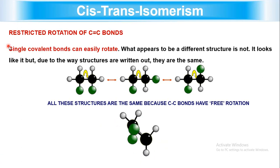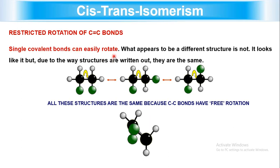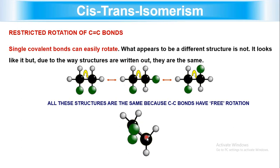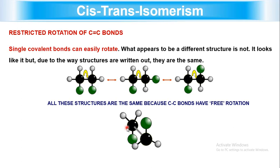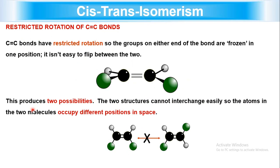Cis-trans isomerism arises from restricted rotation of the carbon-carbon double bond. A single covalent bond, as in ethane, can freely rotate with no restriction. However, with a carbon-carbon double bond, the groups on either end of the bond are frozen in position — rotation is not easy. This gives two distinct possibilities that cannot interchange easily.